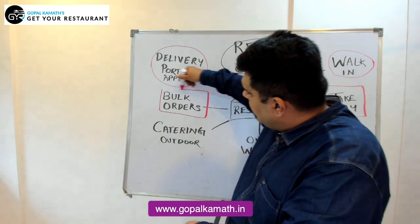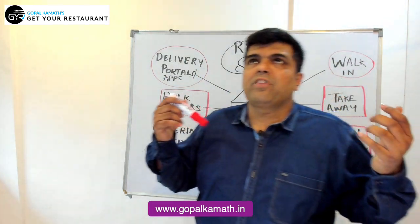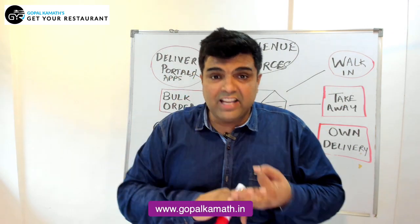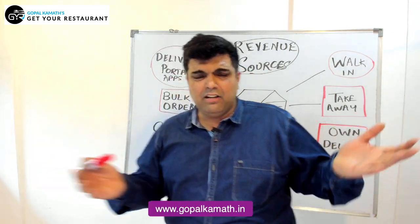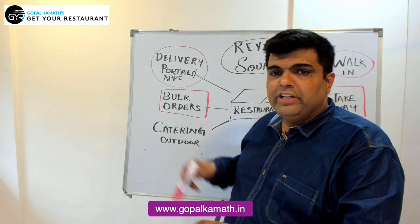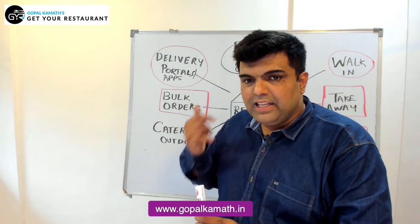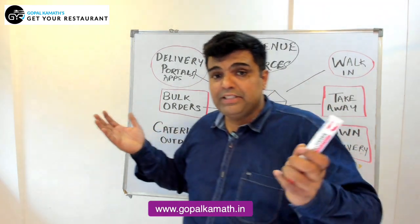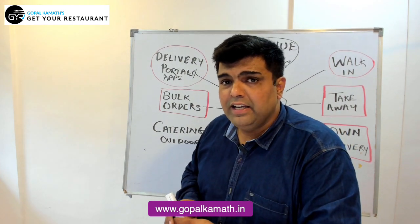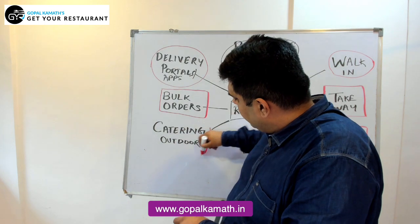The fifth source of revenue is bulk orders. A lot of events happen — birthday parties, get-togethers, engagement parties, small and big events. You have to make sure that if there is any opportunity for a bulk order, you are providing it and making the sales. Bulk orders are big cash infusions into your daily business and really take care of your working capital.